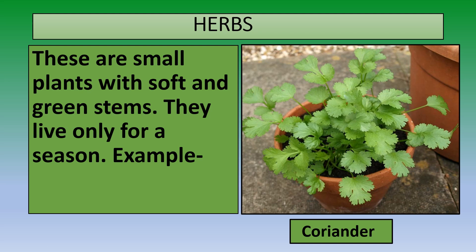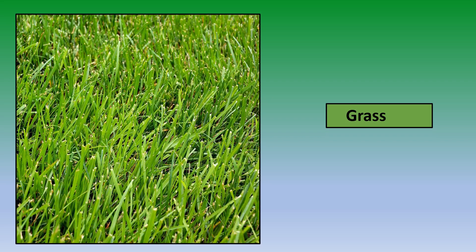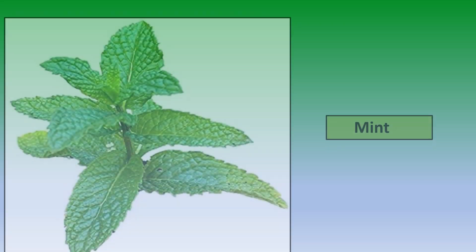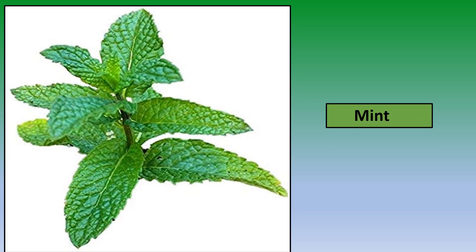Now let's have a look at a few more examples of herbs: grass and mint, which is also a herb. So children, all small plants with soft and green stems are known as herbs.